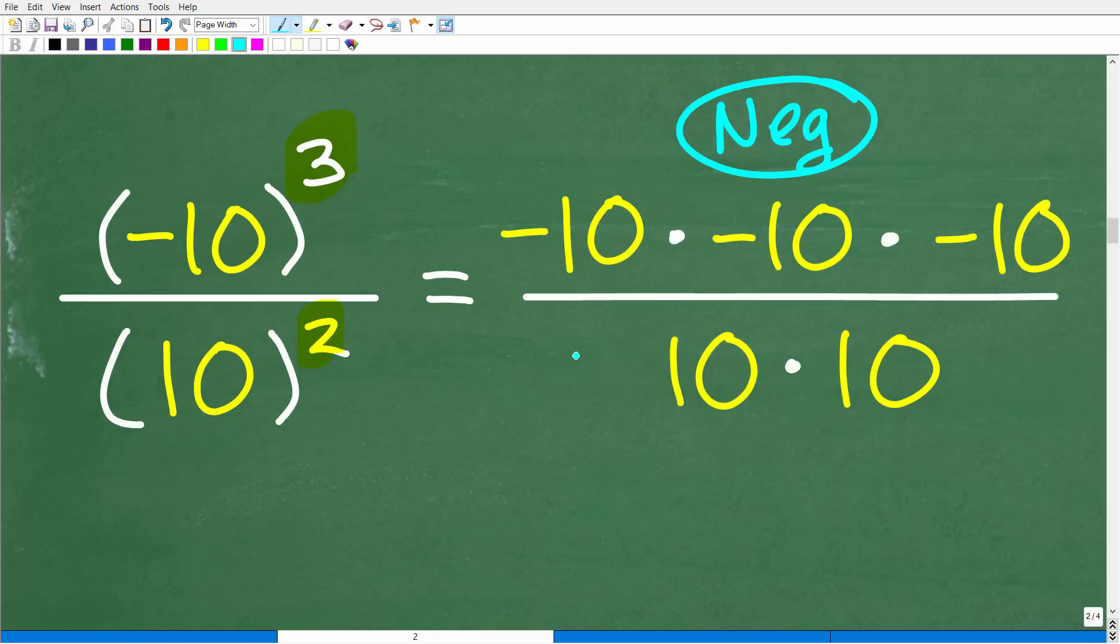So we have a negative in the numerator, and then, of course, we have a positive, because this is positive times a positive is a positive. So a negative divided by a positive is what? Well, that is negative. So our final answer is going to be negative.